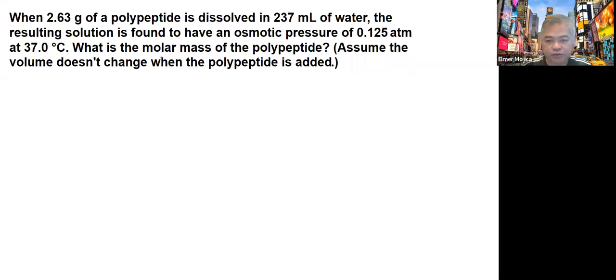In this problem, we're given when 2.63 grams of a polypeptide dissolves in 237 mL of water, the resulting solution is found to have an osmotic pressure of 0.125 atmosphere at 37 degrees Celsius. What is the molar mass of the polypeptide? Assume the volume doesn't change when the polypeptide is added.